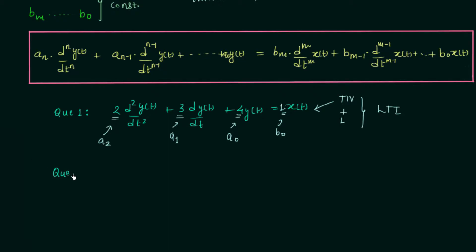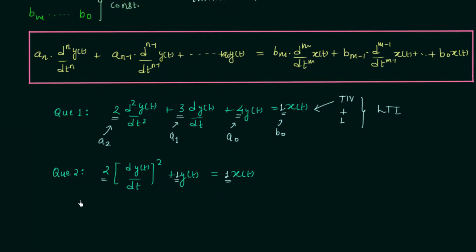In question number 2, we have 2 times the quantity (first derivative of y(t)) squared, plus y(t), equals x(t). The coefficients 2 and 1 are constant, so the system is time invariant. However, the equation does not match the standard equation because we have the square of the derivative, which is a non-linear operator. So this system is time invariant but non-linear — it is not an LTI system.